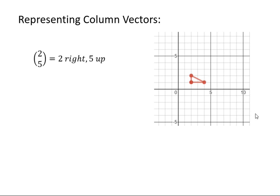And it is represented by a bracket with two numbers in there, a number above and a number below inside those brackets. The top number here represents movement in a horizontal direction, and the bottom number here represents movement in a vertical direction.